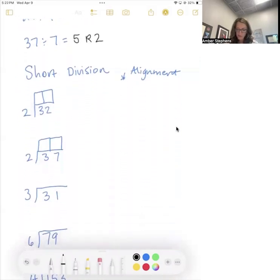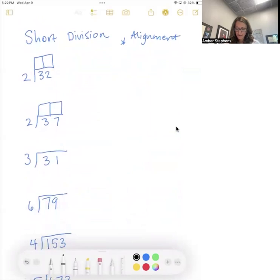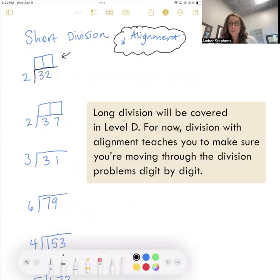This is the short division part of Level C. Again, this is my favorite in this level. I have a little note right here. Alignment is super important. What is alignment? See these boxes right here? The boxes are teaching on the worksheets. How do we line up our numbers? So this is what I call division with the house. You know, the house is this symbol right here. And we don't do long division in Level C. We save long division for Level D. That one's next level.